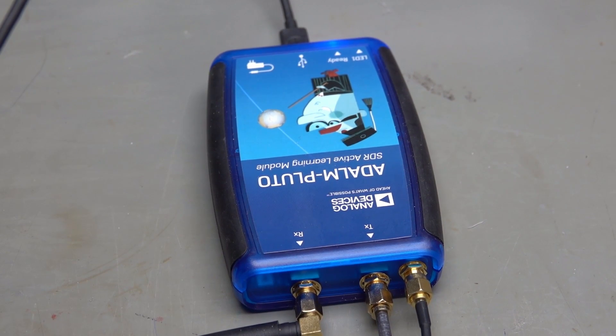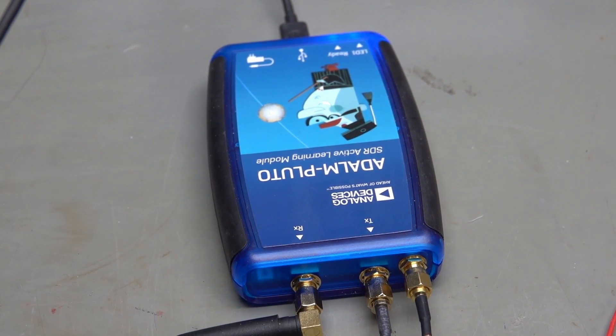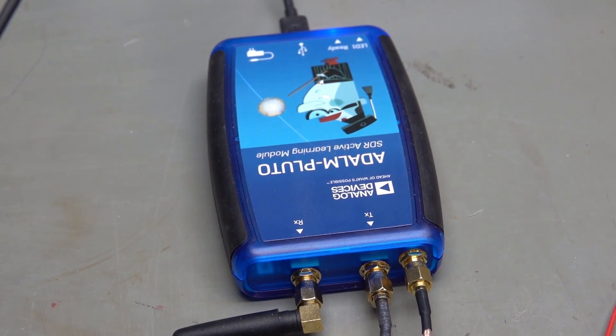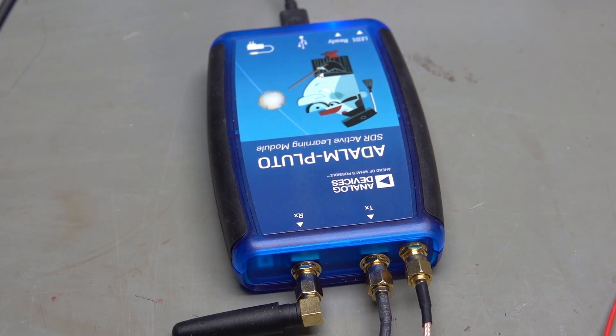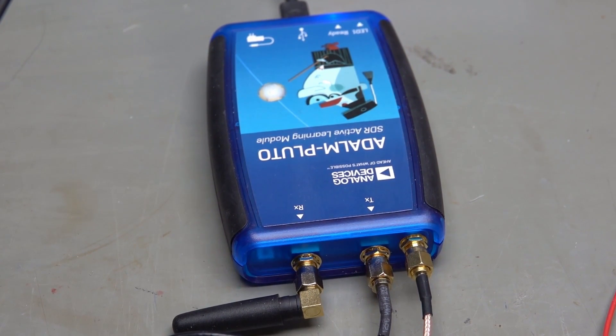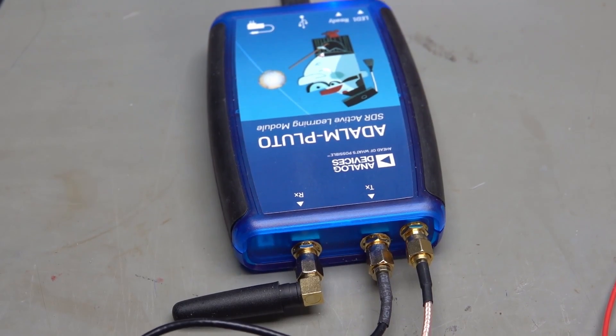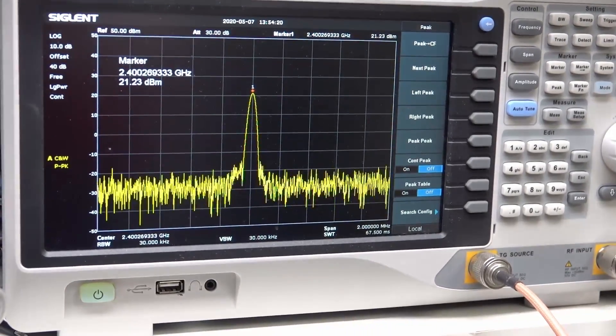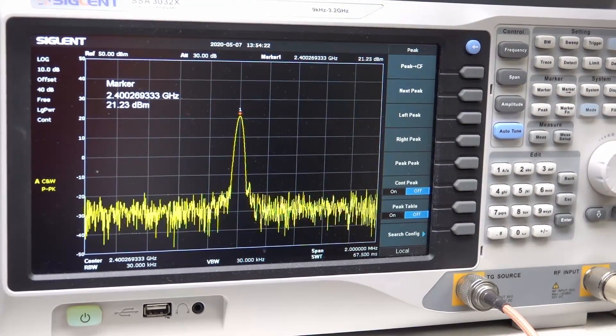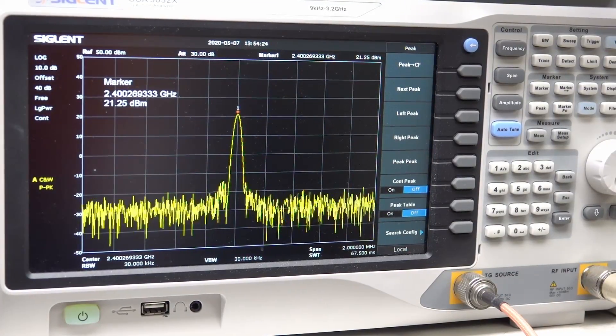As shown in the last video, I will use an Adalm Pluto SDR as a transmitter. So we first have to measure its output power. Then we can calculate the needed gain. Of course, we can use a spectrum analyzer to measure its output power. Not a cheap solution.